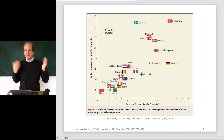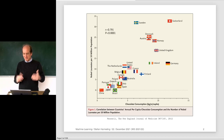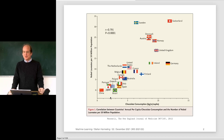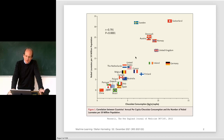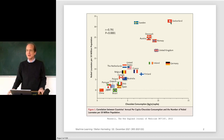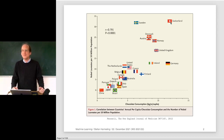So what is this causality thing all about? Let's say you have some data. This is a scatter plot of different countries where on one axis we have the chocolate consumption in kilogram per year per person, and on the other we have the number of Nobel laureates per 10 million population. Curiously, as it turns out, these two numbers are super correlated. So here's a very simple recipe to become more like Switzerland — we just need to eat more chocolate.